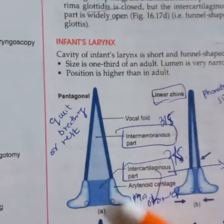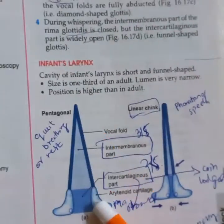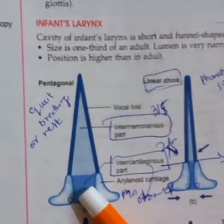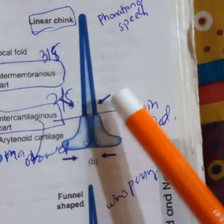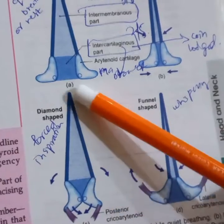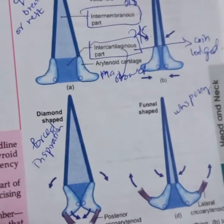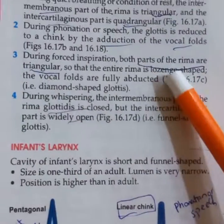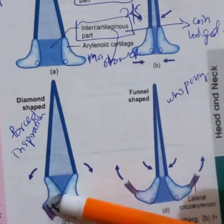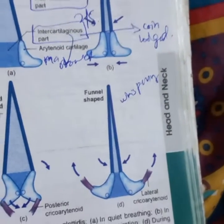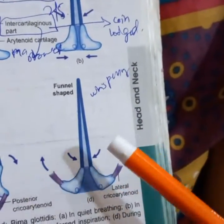During quiet breathing, the rima glottidis shows a triangular intramembranous part and a rectangular cartilaginous part. During deep breathing, the rima glottidis is further apart, and with fully abducted vocal cords, both the rima areas become triangular and diamond-shaped. During whispering, the intramembranous part approximates while the cartilaginous part is apart, giving the rima glottidis a funnel shape.